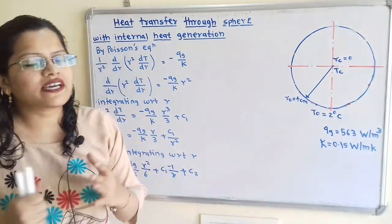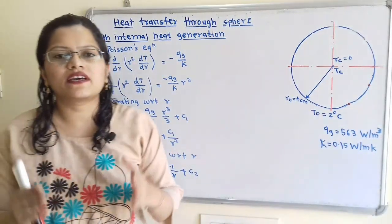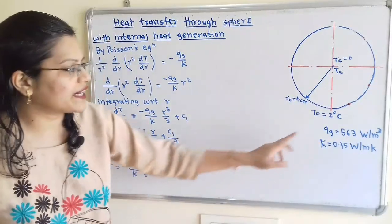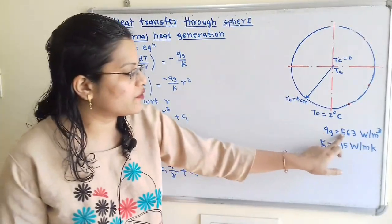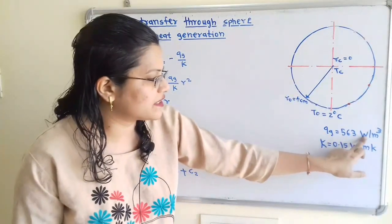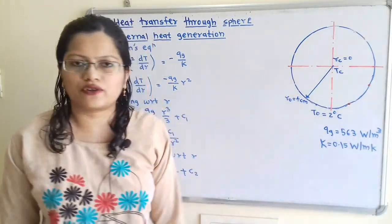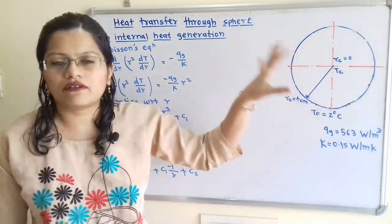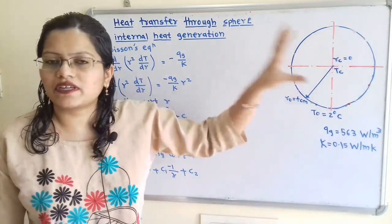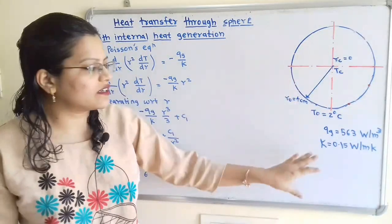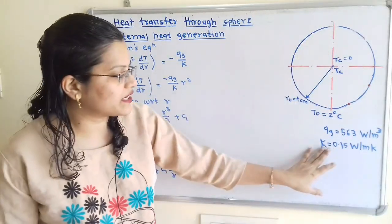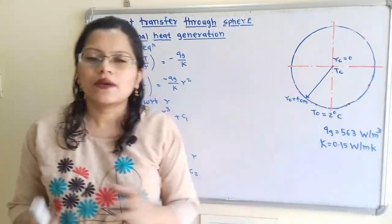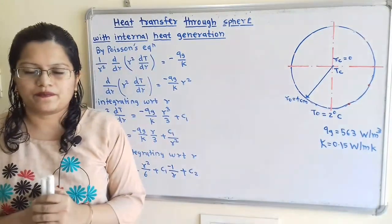The outer surface temperature TO is equal to 2 degrees Celsius. This is the case of internal heat generation, so QG is equal to 563 Watt per meter cube, and the thermal conductivity of the orange is K equal to 0.15 Watt per meter Kelvin.